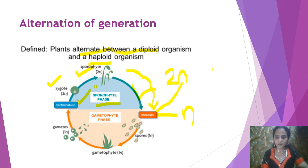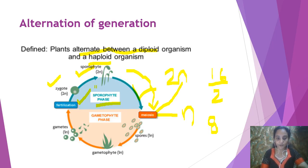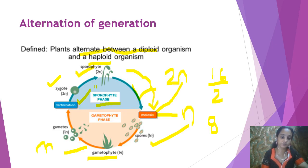Meiosis is called reduction division — it reduces the chromosome number to half. For example, if it is 16, after meiosis it becomes 8. So the diploid undergoes meiosis and converts into haploid. These are the spores. The haploid spores, when they fall down, germinate and put forward the gametophytic generation. From the gametophytic generation, the gametes come — one is a male gamete and the other is a female gamete.